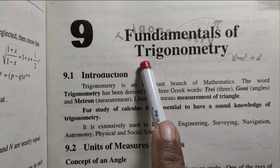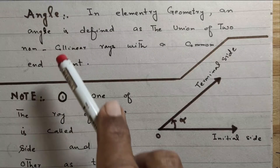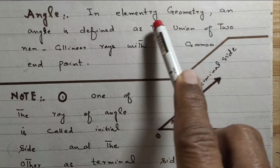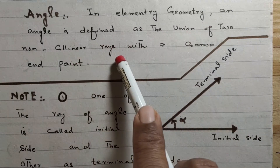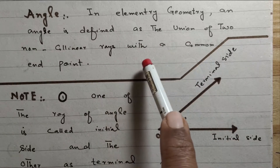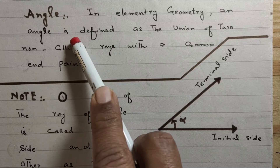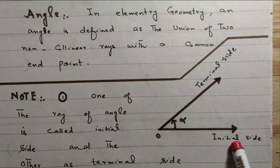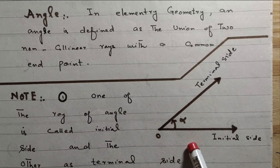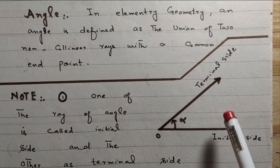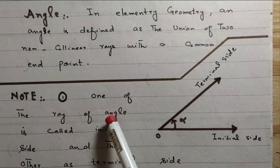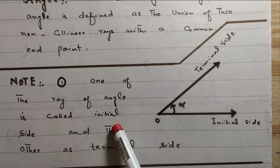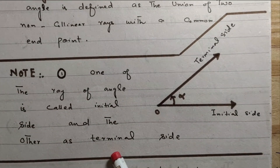Bismillahirrahmanirrahim. Chapter number nine: Fundamentals of Trigonometry. In elementary geometry, an angle is defined as the union of two non-collinear rays with a common endpoint. For example, this line and this line here are non-collinear. One of the rays of the angle is called the initial side, and the other is called the terminal side.